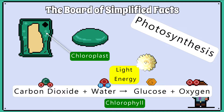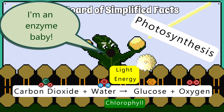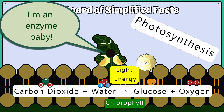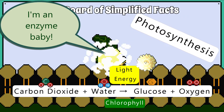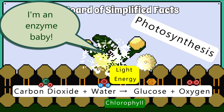Chlorophyll, a green pigment found in the chloroplasts of plants, enables plants to absorb light energy and photosynthesize. It is also important that you know that photosynthesis is an enzyme-controlled reaction.